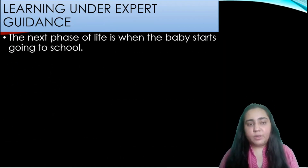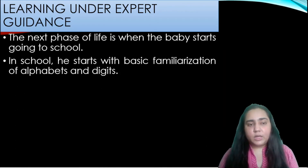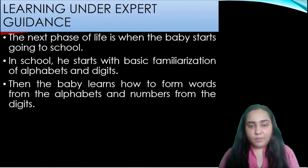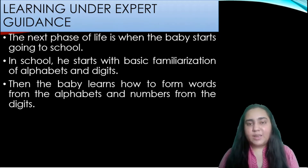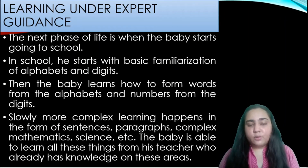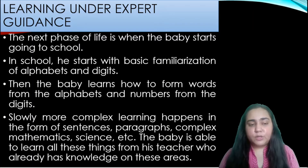The next phase of life is when the baby starts going to school, where he or she is going to meet teachers. In school, the child starts with basic familiarization of alphabets and digits — that's what happens in kindergarten. Then the baby learns how to form words from the alphabets and numbers from the digits. Slowly, more complex learning happens in the form of sentences, paragraphs, complex mathematics, science, etc. The baby is able to learn all these things from the teacher who already has knowledge in these areas. So this is learning under expert guidance.